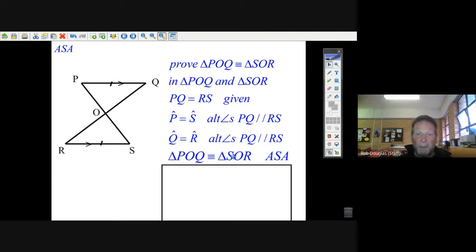reasons. We've got an angle, a side, and an angle that we've matched up. So we've done our job. We can say now that triangle POQ is congruent to triangle SOR, and the